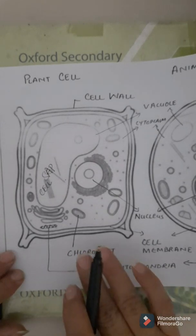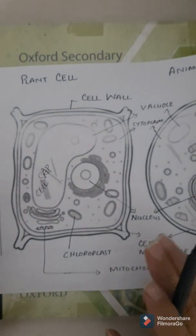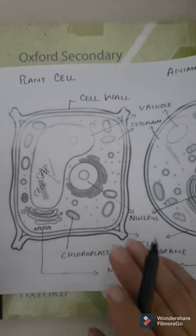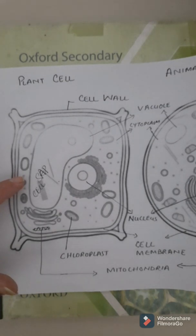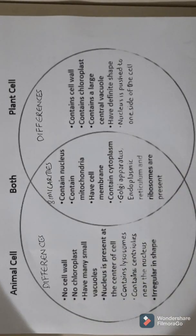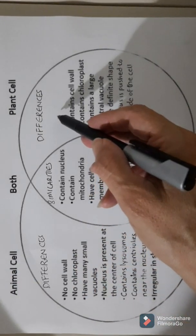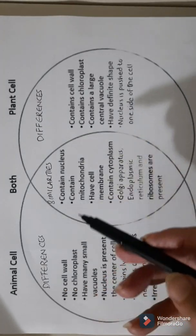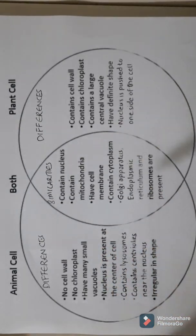I hope you have distinguished the animal cell from the plant cell. You have noticed that some organelles are present in both plant and animal cells, and some are only present in the plant cell but absent in the animal cell. These differences and similarities will be discussed again with the help of a Venn diagram. Whenever we want to show similarities and differences between two things, we do it by means of a Venn diagram. The two sides show the differences between plants and animals, and the middle portion shows the similarities between the animal and plant cell.